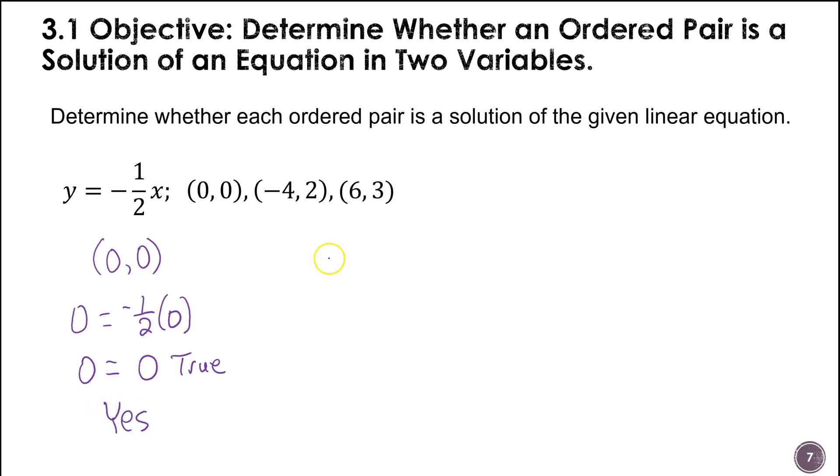Let's try negative 4, 2. So we're going to put 2 in for y. Negative 1 half times negative 4 is 2. 2 equals 2 is a true statement. So once again, this is a yes. So you can see that there can be more than one that works for this, or none of them could. There's all kinds of different combinations that might happen here.